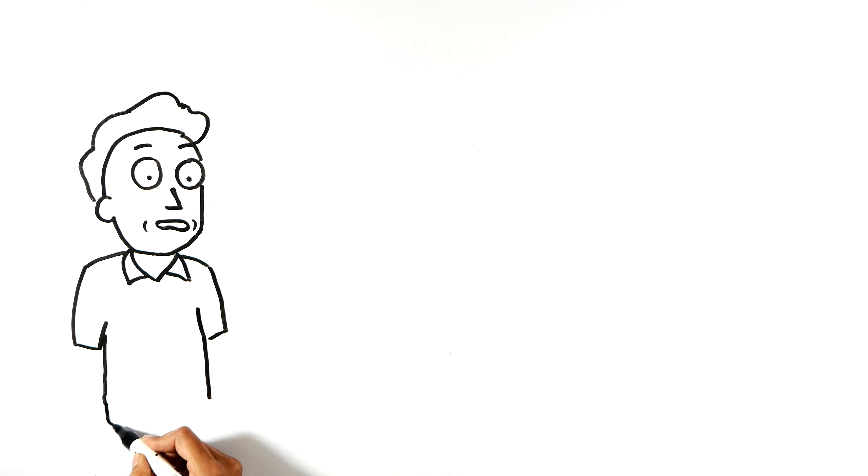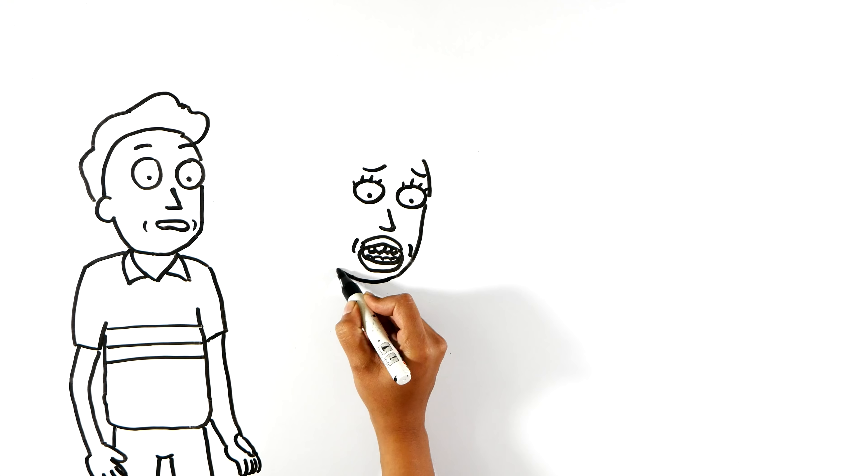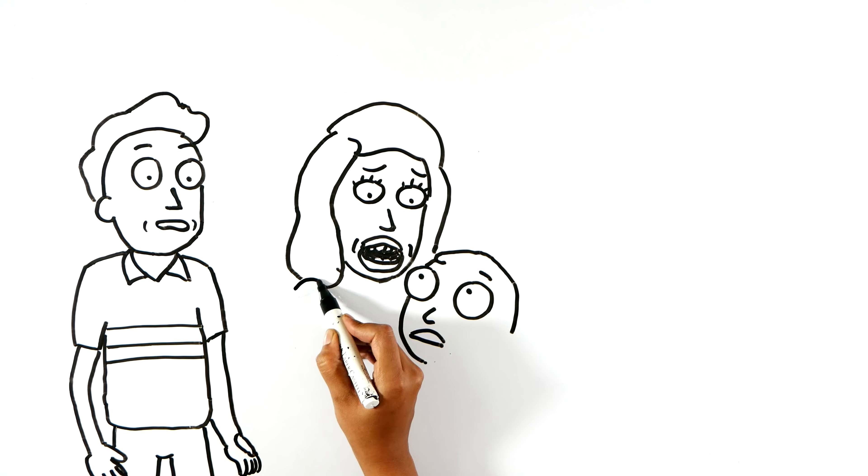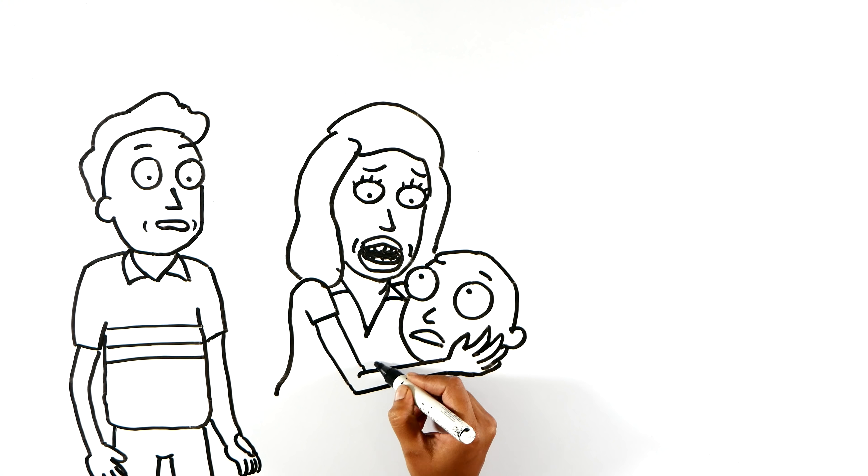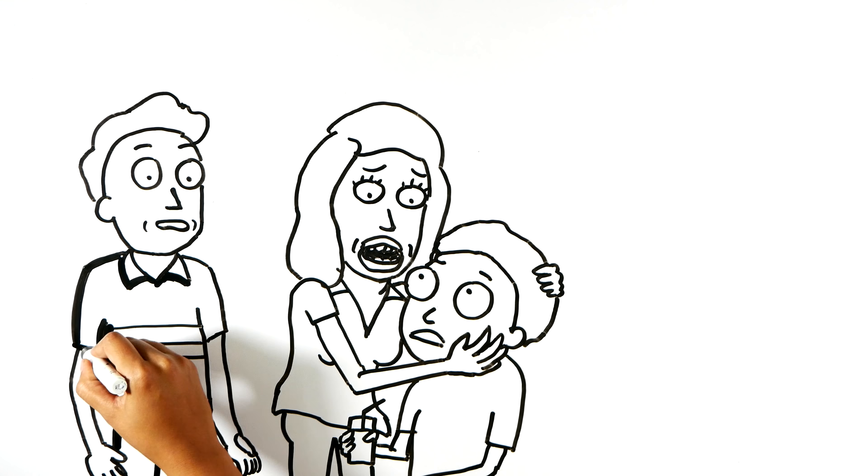Next is Morty's mom and dad, Beth and Jerry. Beth Smith is Rick's daughter and she had a dysfunctional childhood. Rick and his wife got divorced when Beth was very young and she was single-handedly raised by her mom. However, Beth believes that Rick is a better parent than her mom and Rick left the family because of mom. She always wants to keep Rick with her, and that's why all these sociopath behaviors are being tolerated in the family. She's a veterinarian who does horse surgeries.